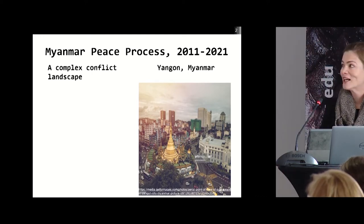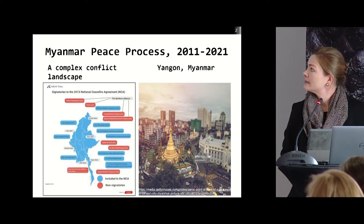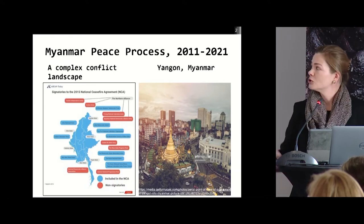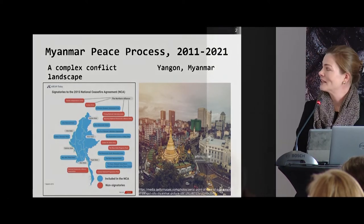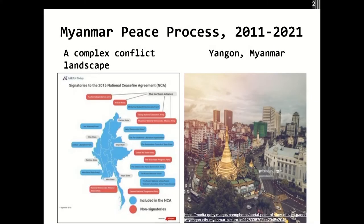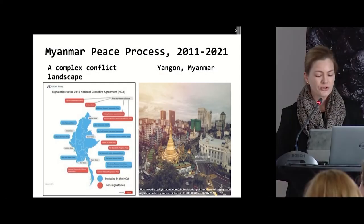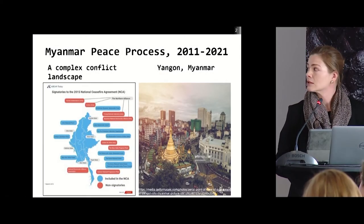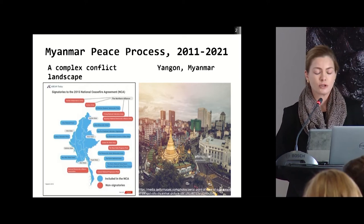Myanmar in 2015 had a complex conflict landscape. There was a so-called nationwide ceasefire agreement, however it was only signed by some of the very many rebel groups in Myanmar, and importantly the strongest rebel groups never signed that 2015 ceasefire agreement. Internationally, that ceasefire agreement was very much lauded and there was high hope for it being the start of a comprehensive peace process, but the conflict landscape was extremely fragmented.